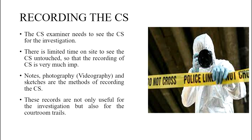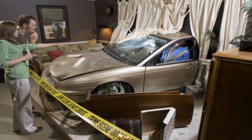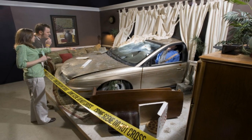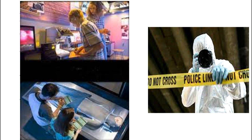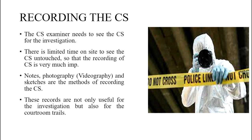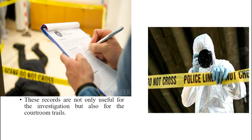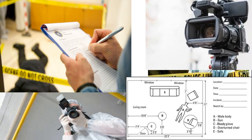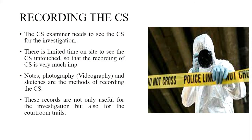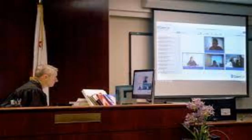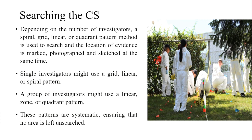After securing the crime scene, the second step is recording the crime scene, which is very important. The crime scene examiner needs to be able to revisit the scene for investigation at any point in time, but there is only a limited time to see the crime scene untouched. Notes, photography or videography, and sketches are the methods of recording a crime scene. These records are not only useful for investigation but also for courtroom trials.